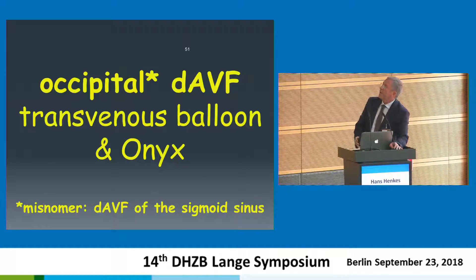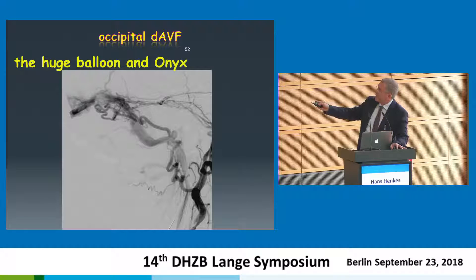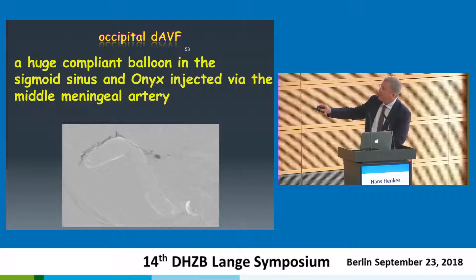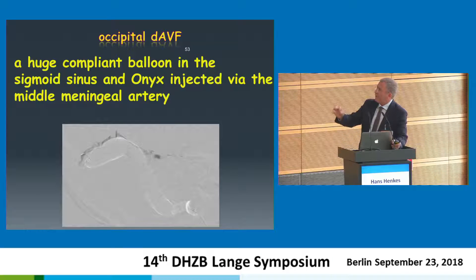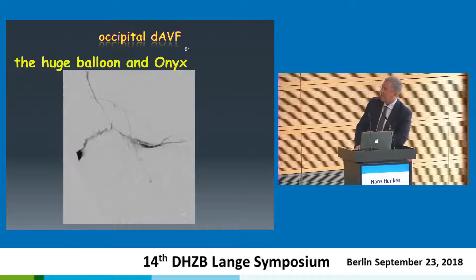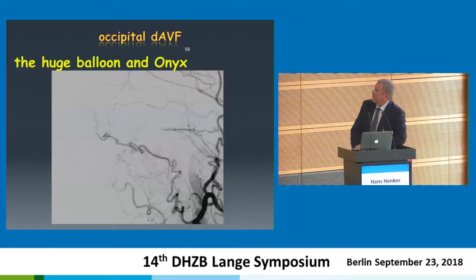Occipital dural AV fistulas are not really occipital — they are at the cavernous sinus or the sigmoid sinus; it's a clear misnomer. The treatment can be transarterial or transvenous, but there is a very elegant technique. This is the transverse and sigmoid sinus. Arteries come through the bone and dura supplying the fistula. The trick is you take a large compliant balloon that just follows the sinus, obliterating it, then put a microcatheter into the middle meningeal artery and inject Onyx. The Onyx flows like lava around the balloon — not obliterating the sinus, but obliterating the orifice where the artery contacts the sigmoid sinus. You see the lava of Onyx around the balloon, and all these Onyx streaks around the inflated balloon. Very elegant, very simple.